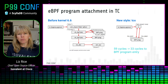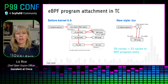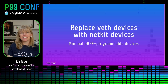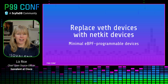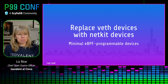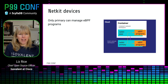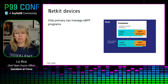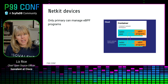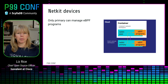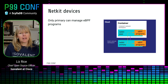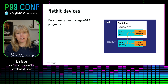TCX does help with performance, but more importantly it was laying the groundwork for the final piece of the puzzle: the introduction of NetKit devices, which Daniel added to the kernel pretty much exactly a year ago. Daniel described these as minimal BPF-programmable devices. Like virtual Ethernet devices, NetKit devices come in pairs — one inside the host network namespace known as the primary, and one inside the container's network namespace called a peer. Only the primary on the host side is able to manage eBPF programs, but the primary is able to attach eBPF programs into its peer.